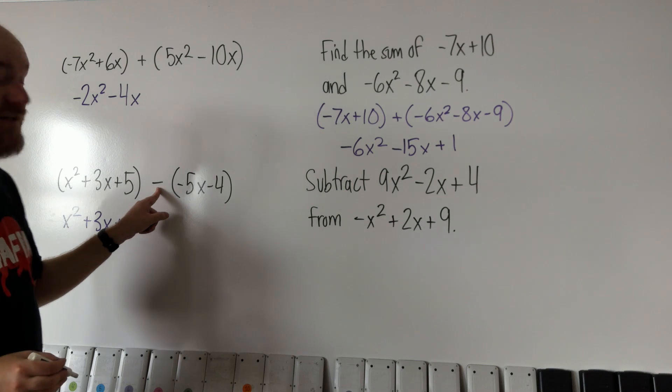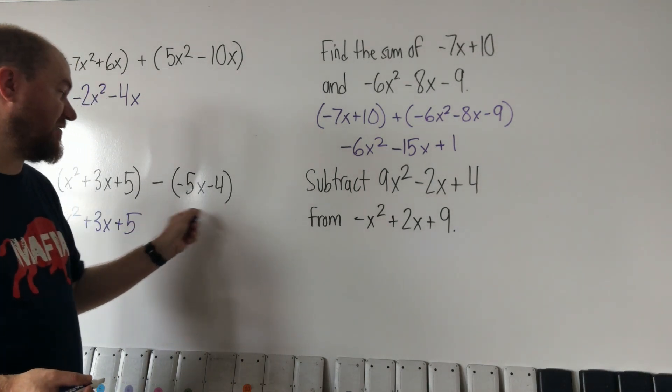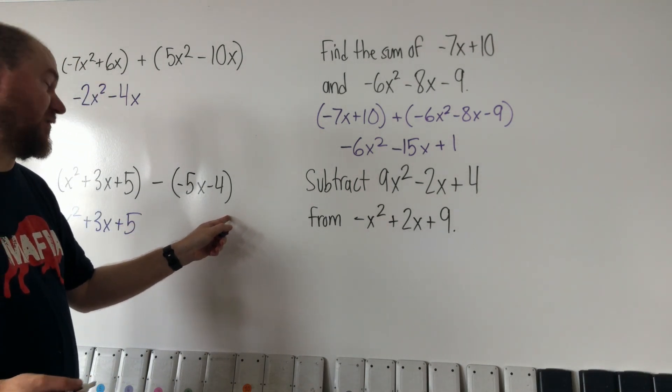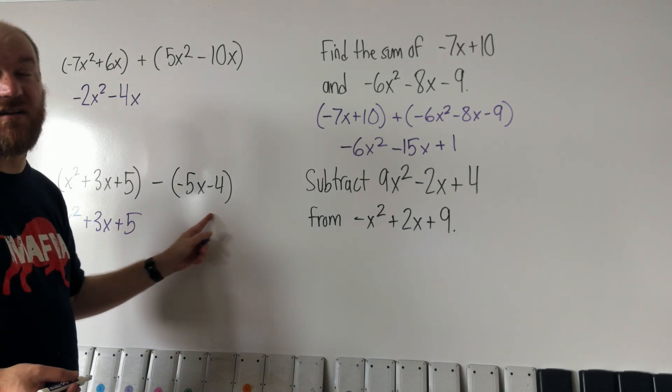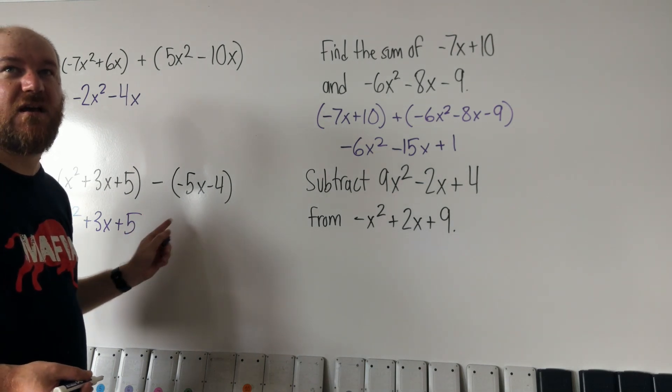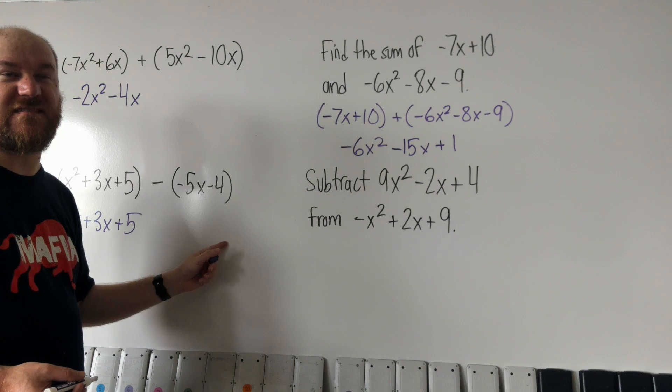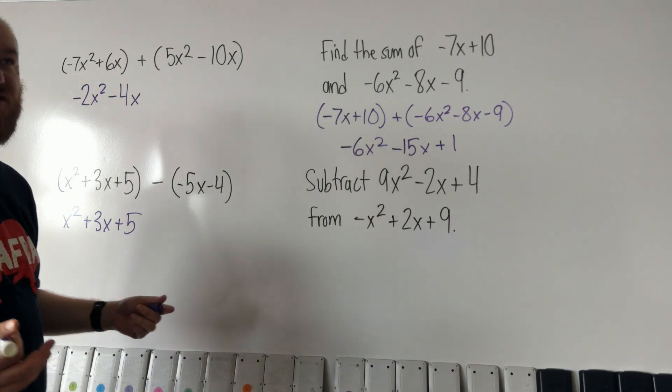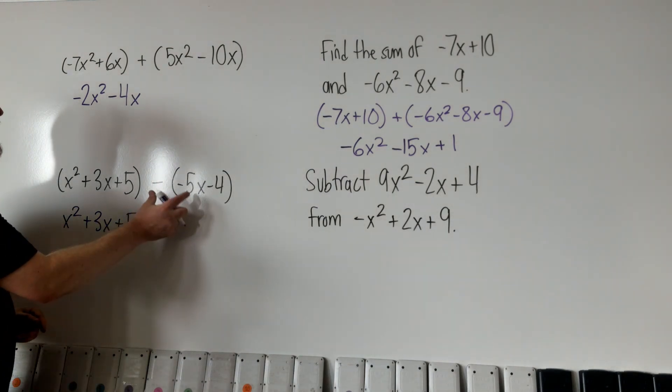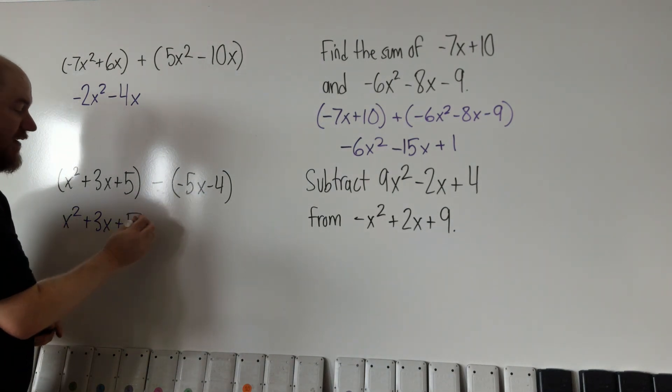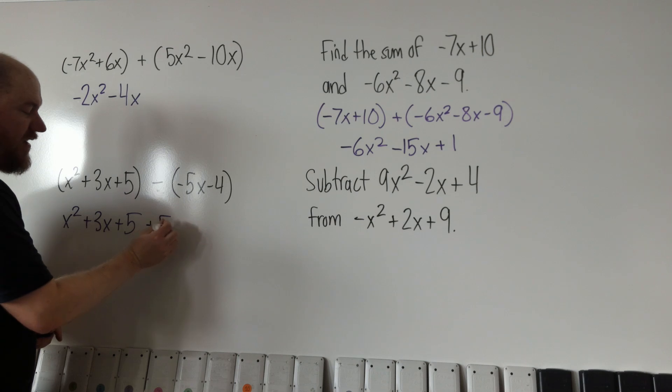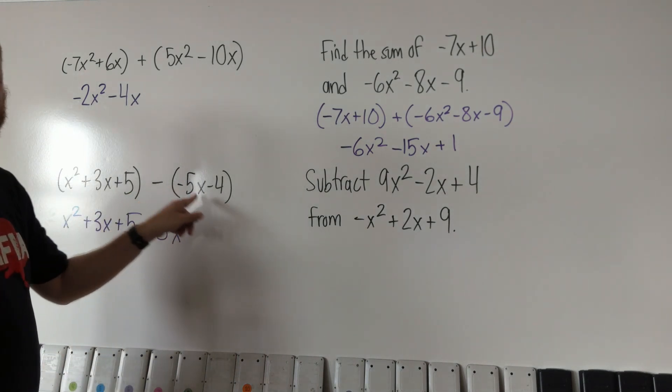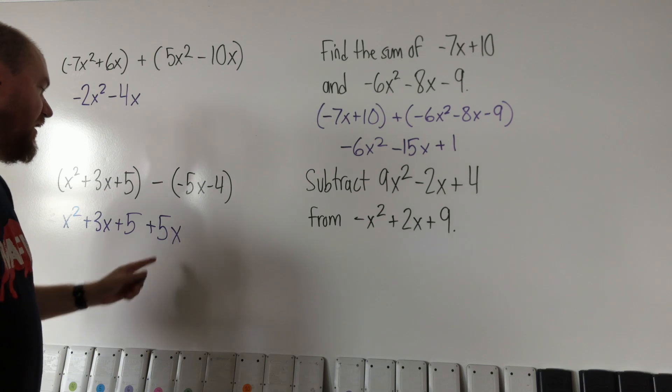And then we're actually going to distribute this minus to everything inside the parentheses. Since everything here needs to be subtracted, let's make everything inside its opposite so that the subtraction is taken care of. So a negative negative 5x will actually be a plus 5x because we're not taking away 5x, we have a double negative there.